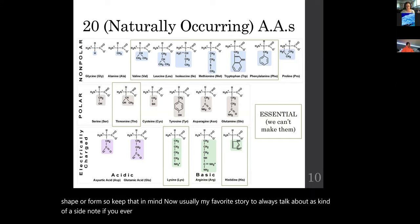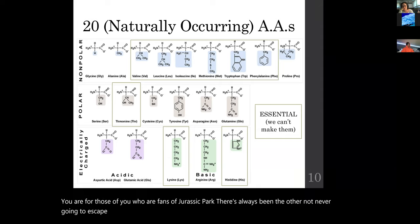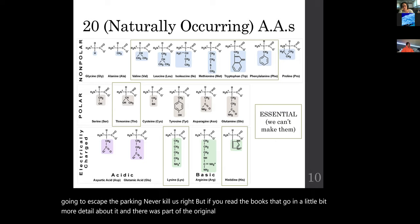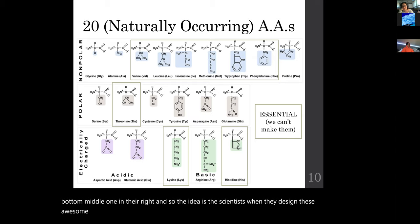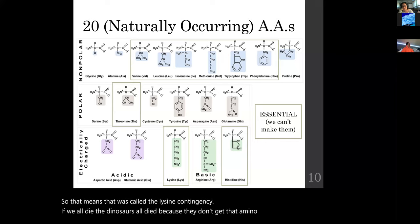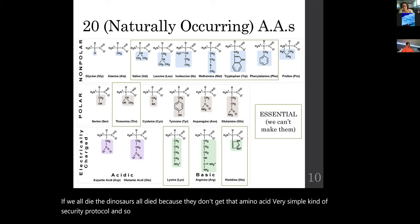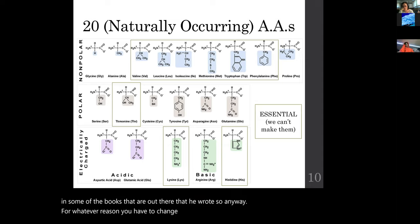A fun side note: for Jurassic Park fans, the books by Michael Crichton describe something called the lysine contingency. Lysine is one of those essential amino acids. The scientists designed the dinosaurs so they couldn't produce lysine — if they weren't fed it, they would die. That was the security protocol. Clearly, after many sequels, that didn't work. The takeaway: eat all your amino acids, and if you change your diet, make sure you supplement to obtain all of them.